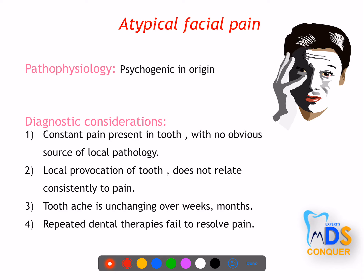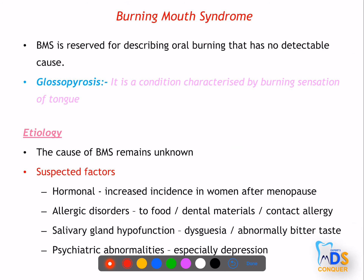Atypical facial pain is of psychogenic origin. Diagnostic considerations include: constant pain present in a tooth with no local pathology, local provocation does not consistently relate to pain, the toothache remains unchanged for weeks, months, or years, and repeated dental therapies have failed to relieve the pain.